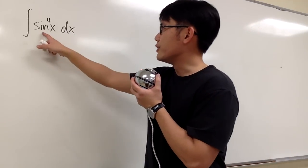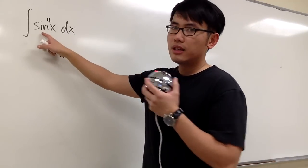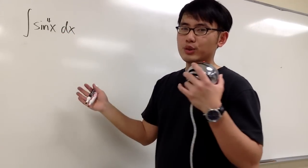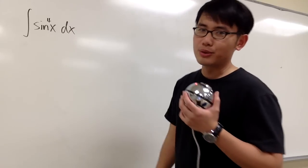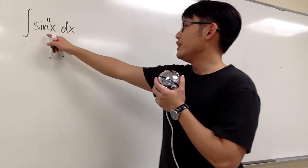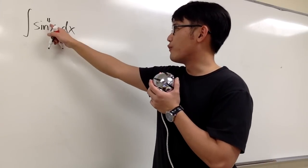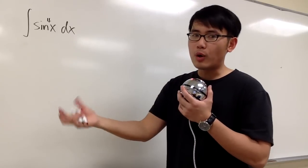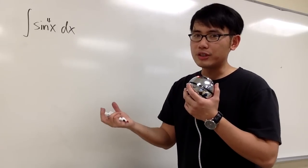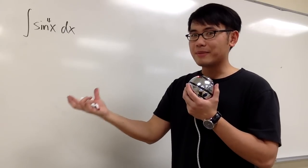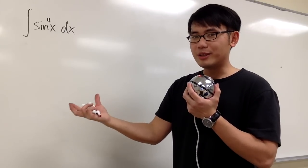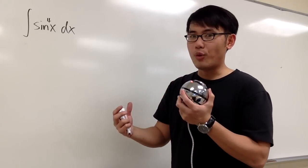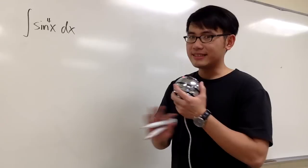Let's integrate sine to the fourth power of x. Unfortunately, we don't have cosine x right here, so we cannot use u-substitution right away. Also, if you look at sine to the fourth power, if you want to break this apart as sine to the third power times sine to the first power, we are going to have a hard time writing sine to the third power in terms of cosine in a nice form. Let's not do that.